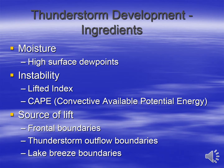To initiate lift within a moist and unstable environment, you also need a source of lift — a weather system that forces air parcels upward. If the parcels are unstable, they will continue to rise and generate clouds and, if the environment is unstable enough, thunderstorms. Cold and warm fronts, outflow from other thunderstorms, and lake breeze boundaries, which act as small cold fronts, can all generate lift.